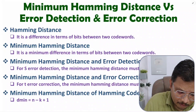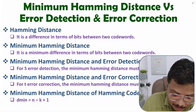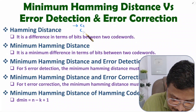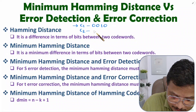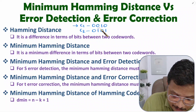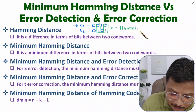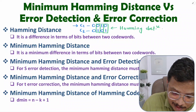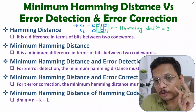Hamming distance is a difference in terms of bits between two code words. For example, if code word c1 is 0010 and c2 is 0101, then you need to see how many bits differ between c1 and c2. The first bit is the same, the second bit is different, the third bit is different, and the fourth bit is also different. So the hamming distance between c1 and c2 is 3.